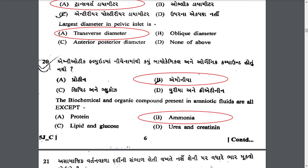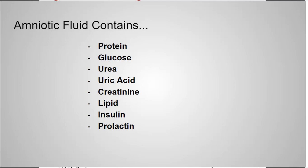Which biochemical and organic compound is not present in amniotic fluid? The answer is ammonia — all are present except ammonia. Amniotic fluid contains protein, glucose, urea, uric acid, creatinine, lipid, insulin, and prolactin.